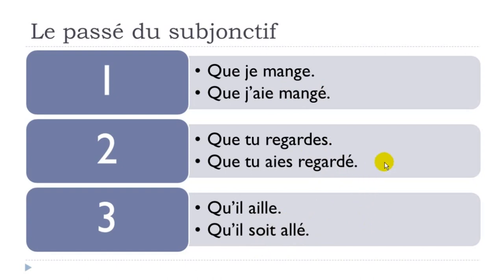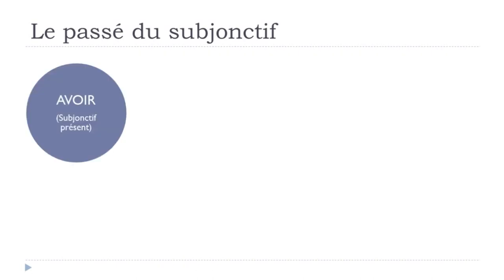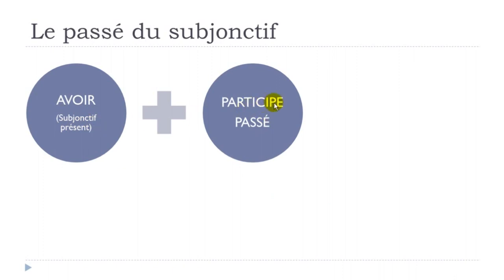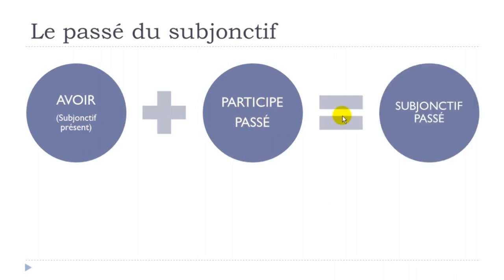This passé du subjonctif is constructed like all the composed tenses we've seen so far. First, avoir at the subjonctif présent form, then your participe passé, and you get your subjonctif passé. Or in some cases, you use être at the subjonctif présent form, then the participe passé, and you get your subjonctif passé. It's not really tricky because it follows exactly the same rules as the composed tenses we've been studying.